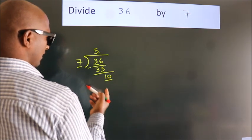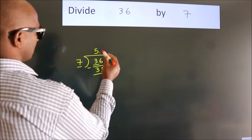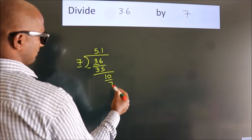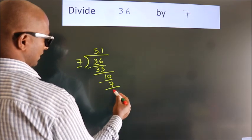So, 10. A number close to 10 in 7 table is 7 ones, 7. Now, we subtract. We get 3.